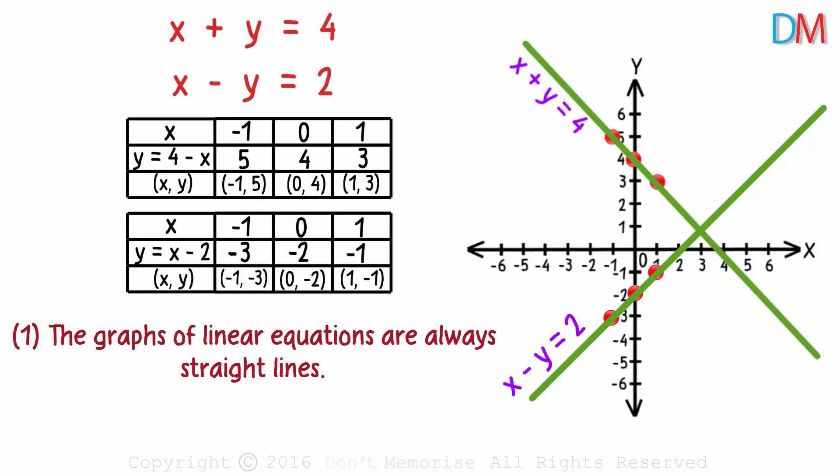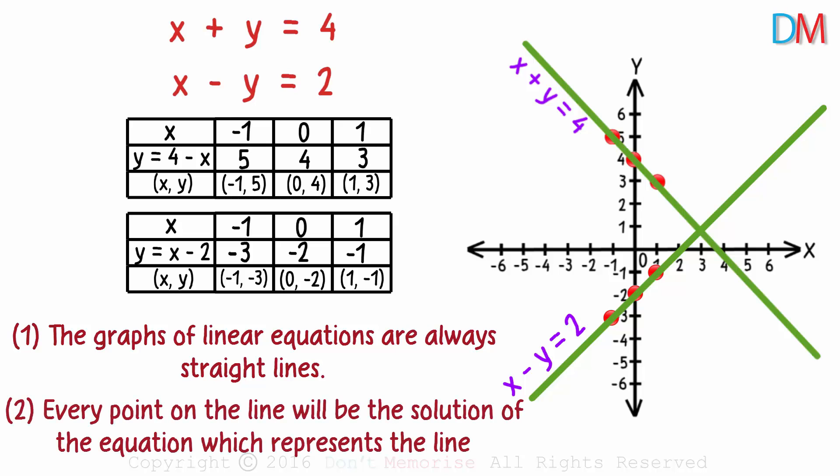The graphs of linear equations are always straight lines. Next, every point that lies on this line will be a solution for the equation x plus y equals 4. And every point that lies on this line will be a solution for the equation x minus y equals 2.